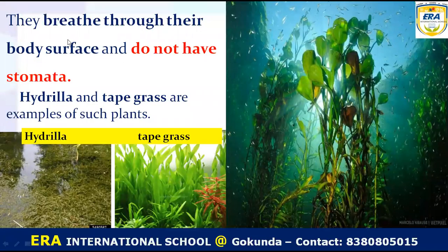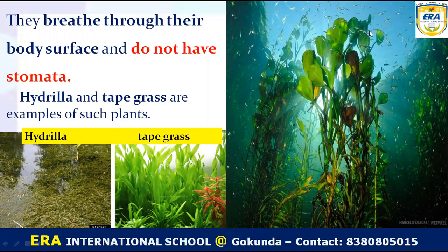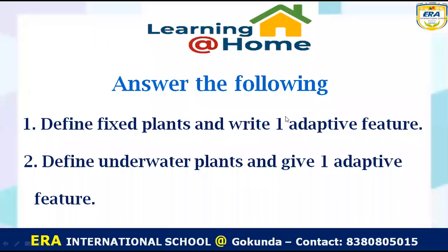The second feature of underwater plants is that they breathe through their body surface — they do not have stomata. Unlike fixed plants that have stomata, underwater plants breathe through their leaves, stems, and roots — all body parts. Examples of underwater plants are hydrilla and tape grass, which grow completely submerged in the water.